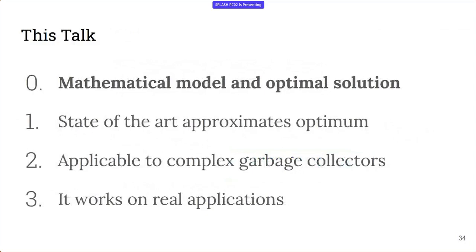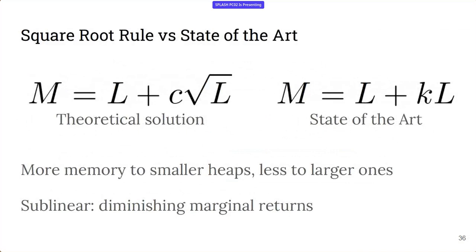Okay, so that's our optimal solution. Now let's see what everyone else does. It turns out basically everyone else chooses the heap limit rule M equals live memory plus extra memory proportional to live memory. This means they are using a linear rule. And comparing to them, we give more memory to a smaller heap and less memory to a larger heap. This means we are using a sublinear rule. This sublinearity reflects the idea of diminishing marginal return in economics.